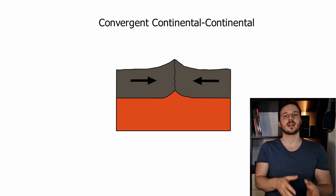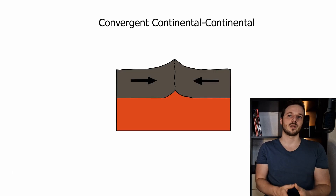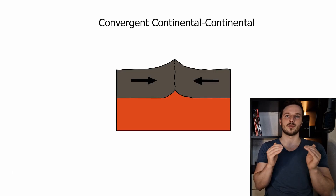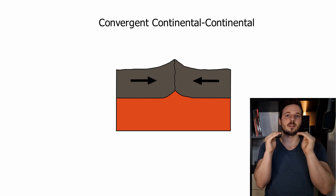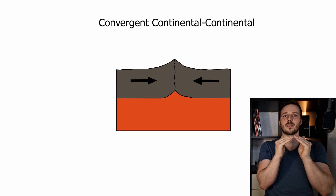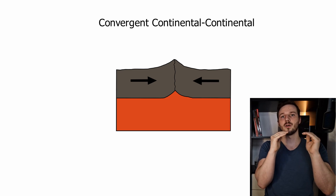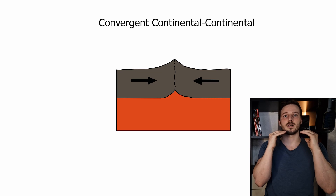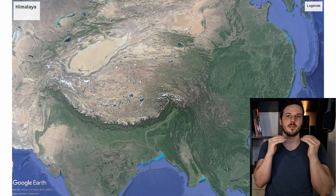Then we have continental-continental convergent plate boundaries, and that is when two nearly similar dense and similarly thick continental plates are pushed towards each other. As they have the same density, none is pushed beneath the other and they create a large mountain range, like you can see in the Himalaya.